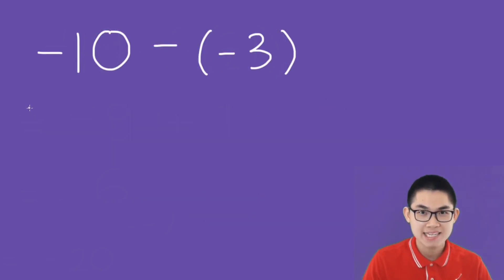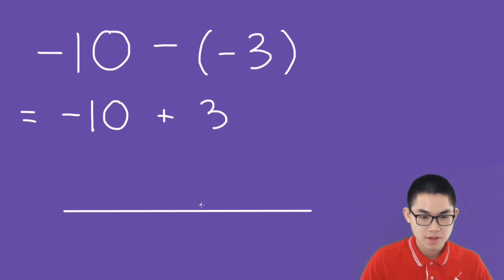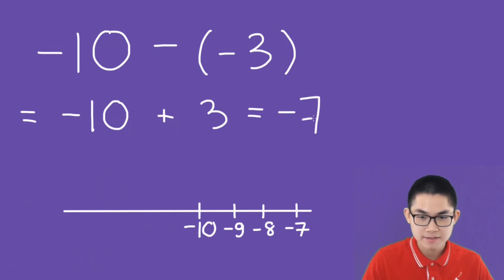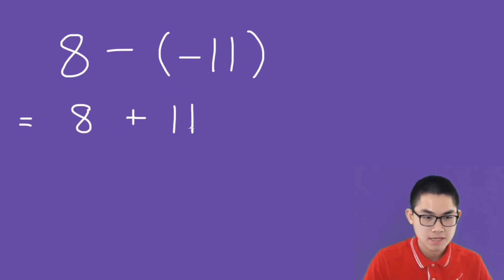Negative 10 minus negative 3 is equal to negative 10 plus 3. We start at negative 10 and move to the right three times: 1, 2, 3. This is negative 10, negative 9, negative 8, negative 7. So the answer is negative 7. And 8 minus negative 11 is equal to 8 plus 11, and 8 plus 11 is 19.